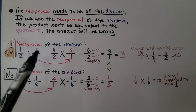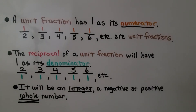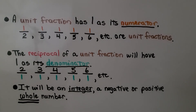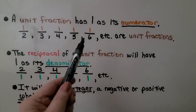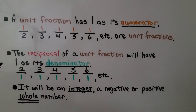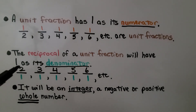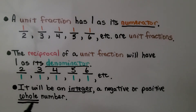This second term right here is the divisor — that's the one we flip around as the reciprocal. A unit fraction has one as its numerator. These are all unit fractions; they all have a one for a numerator. We could even say one-ninety-ninth, or one over a trillion — that would still be a unit fraction. The reciprocal of a unit fraction will have one as its denominator. We know we can write a whole number as a fraction by putting one as its denominator, meaning it will be an integer — a negative or positive whole number. So the reciprocal of a unit fraction will be an integer.